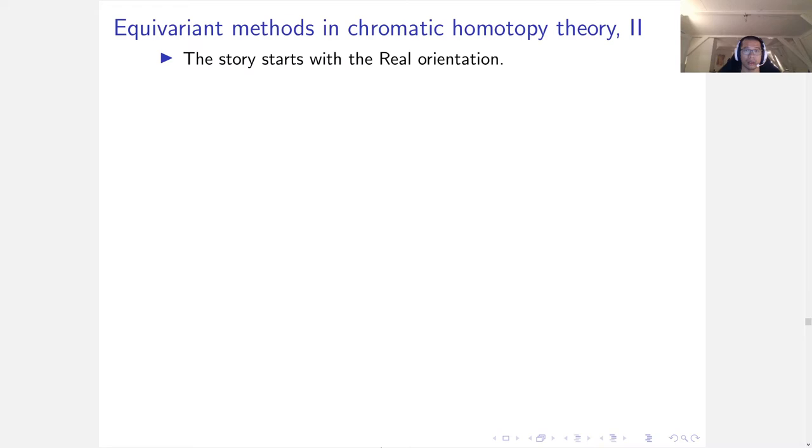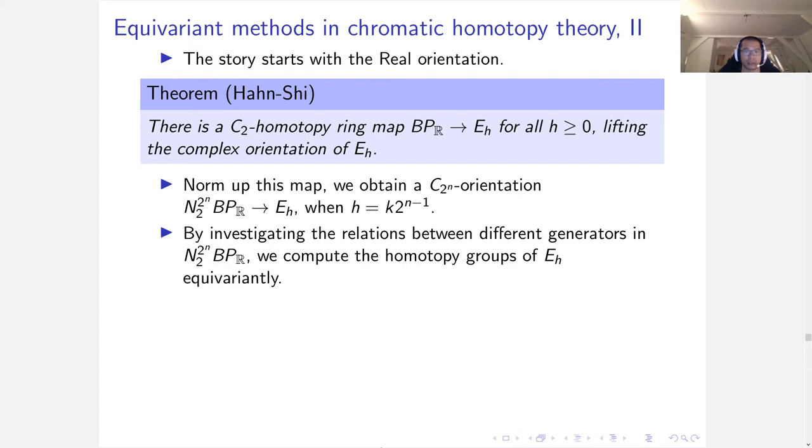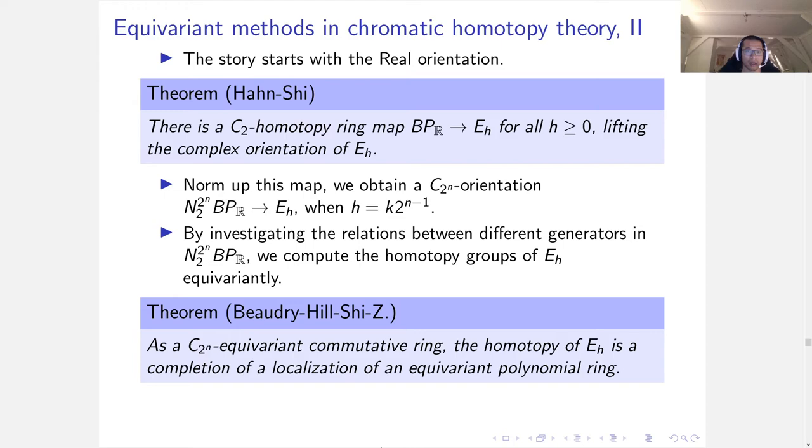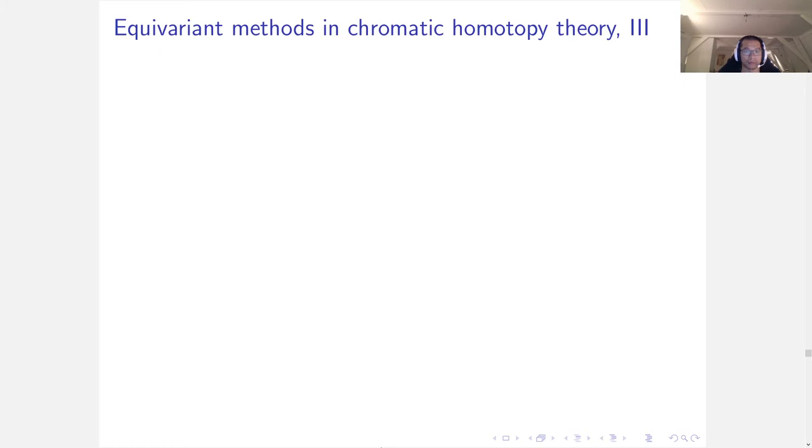So first, the story starts with the real orientation. The real orientation is a C_2 homotopy ring map from BP_R to E_h in all heights, which lifts the complex orientation of E_h. Let's norm this map up. We obtain a C_2^n orientation. By computing relations between different generators in norm of BP_R, we can compute the homotopy groups of E_h equivariantly. We show that as a C_2 equivariant ring, the homotopy of E_h is the completion of a localization of an equivariant polynomial ring. The equivariant polynomial ring is a nice quotient of the underlying homotopy groups of norm of BP_R.